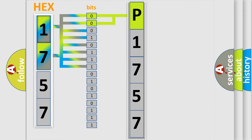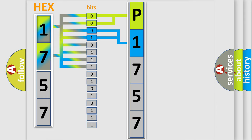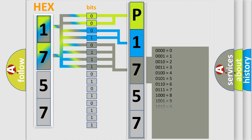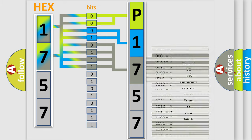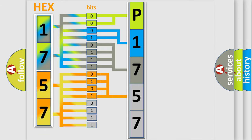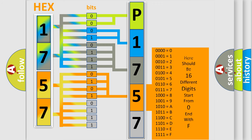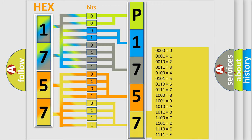The next two bits determine the second character. The last four bits of the first byte define the third character of the code. The second byte is composed of a combination of eight bits. The first four bits determine the fourth character of the code, and the combination of the last four bits defines the fifth character. A single byte conceals 256 possible combinations.